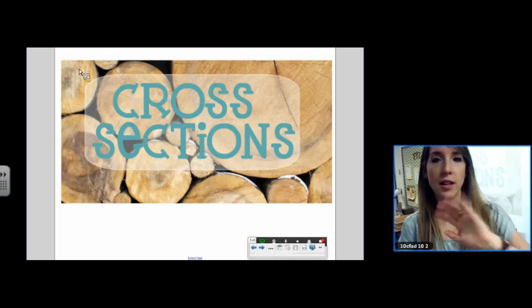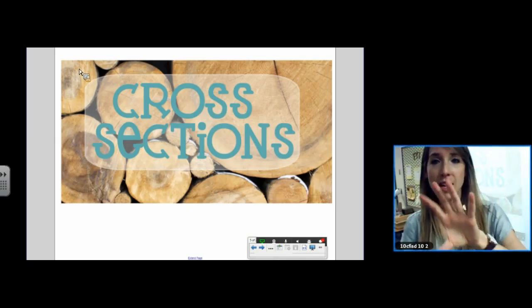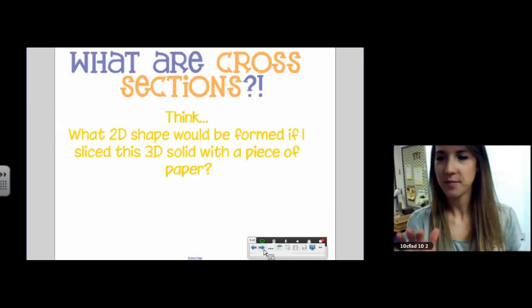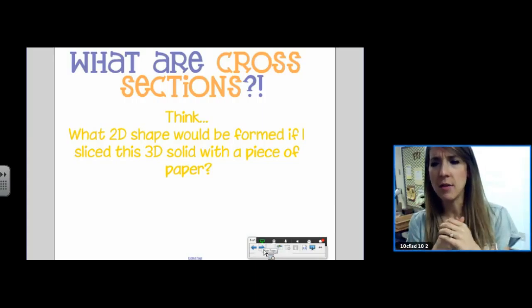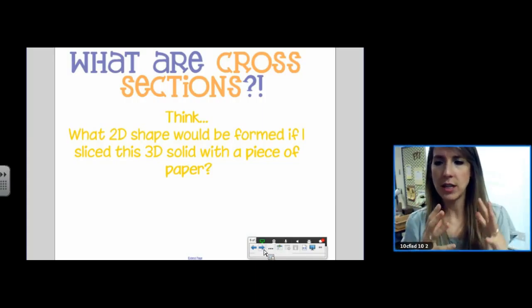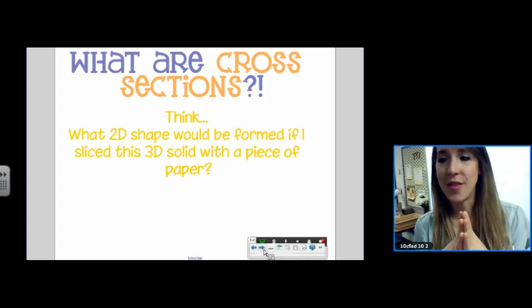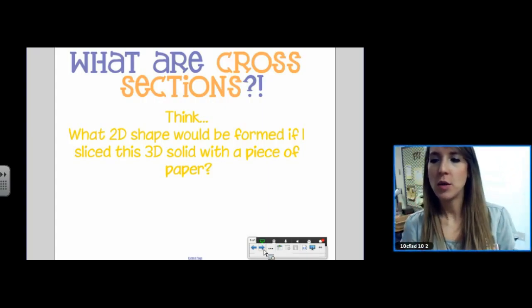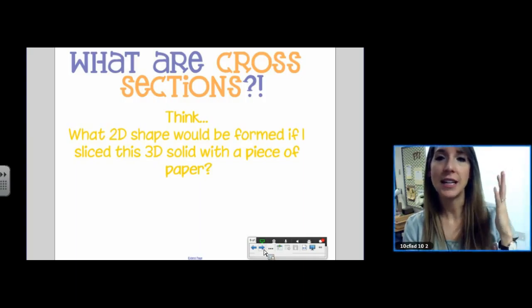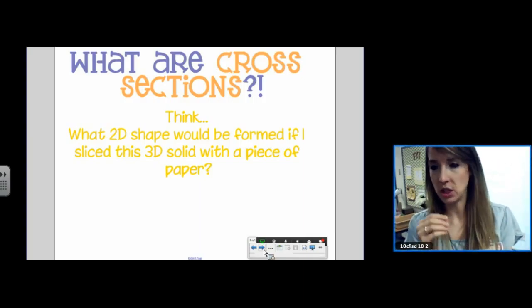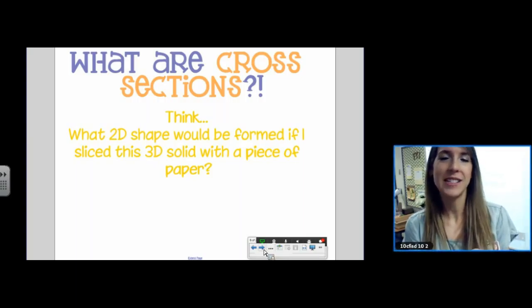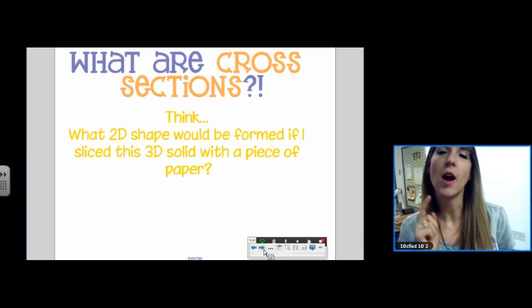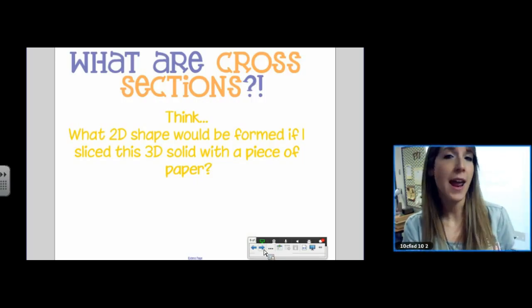And we're also going to talk about solids of revolution. When we take a 2D figure, we rotate it about an axis, and we get a 3D solid. So what are cross-sections? A cross-section is when you think about what 2D shape would be formed if I slice a 3D solid with a piece of paper, or a knife, or a plane. So we're talking about a plane intersecting a solid, and what two-dimensional shape we get. Our cross-section is never going to be a cone. Our cross-section is going to be like a rectangle, or a triangle, or a circle.